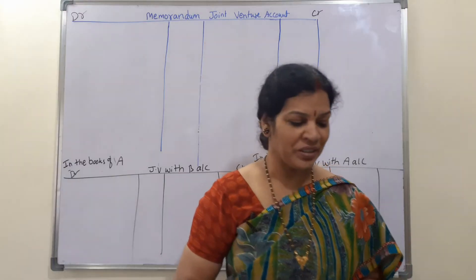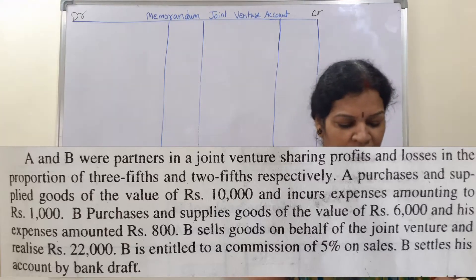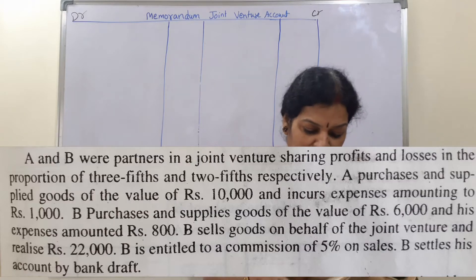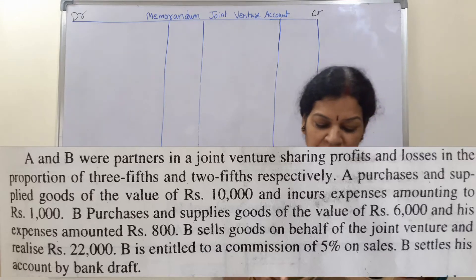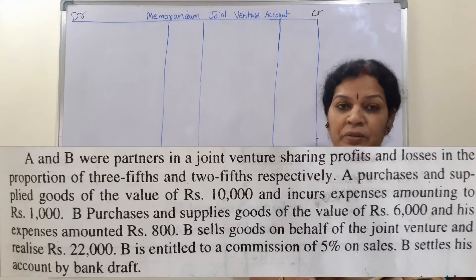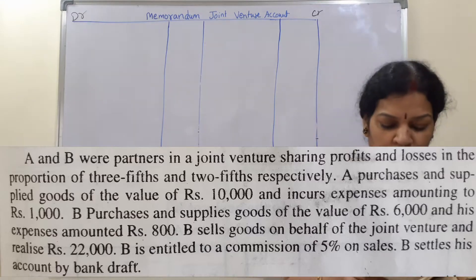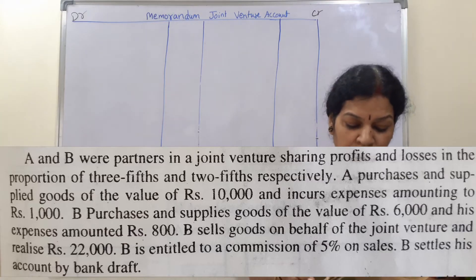The problem is: A and B were partners in a joint venture sharing profits and losses in the proportion of 3/5 and 2/5 respectively, so their sharing ratio is 3 is to 2. A purchases and supplied goods to the value of 10,000 and incurred expenses amounting to 1,000.